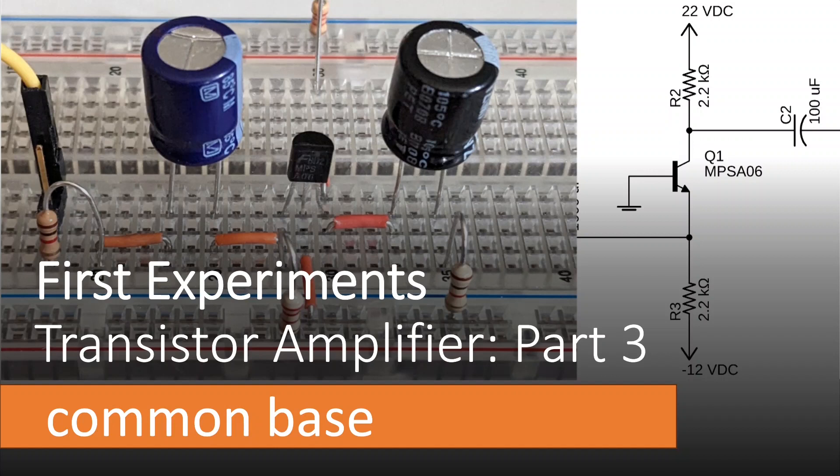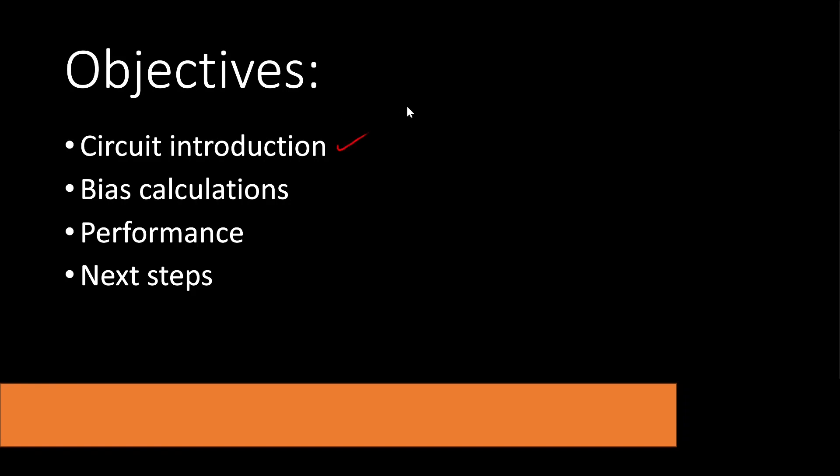You can build real-world circuits today so that you can explore that theory in practice. Today's topic is the Common Base Transistor Amplifier. We'll introduce the circuit, provide a brief explanation of the DC bias considerations, explore the performance using a signal generator and an oscilloscope, and then we'll explore some of the next steps you might like to take to learn more about this particular topic.